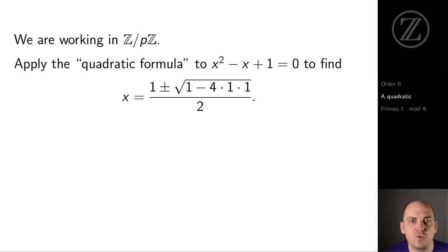Let's reflect on this. We can get an element of order 6 just by solving a quadratic. The quadratic formula works just as well in Z mod p as it does in usual mathematics. So let's try to solve x squared minus x plus 1 equals 0 to find an element of order 6.